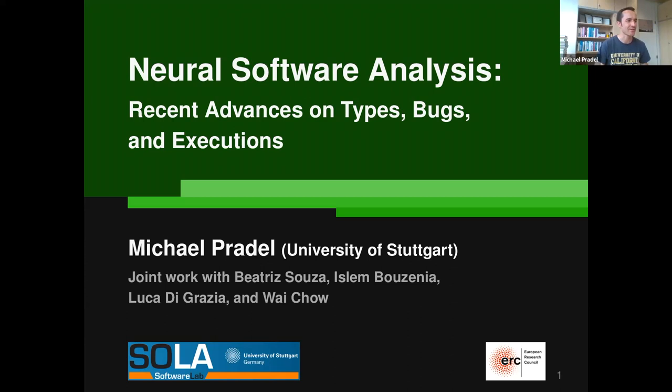I'm going to share some of our recent work in the space of neural software analysis, which is essentially just another way of saying LLMs or ML or AI for code. In particular, I'll talk about work on types, bugs, and executions. If you want to ask any questions, don't wait until the end — feel free to unmute and interrupt me at any point.